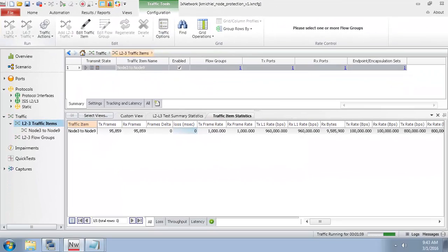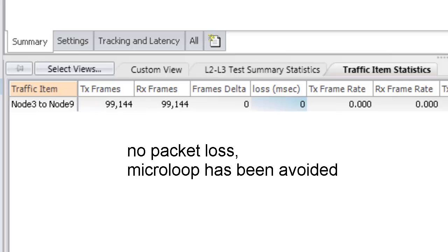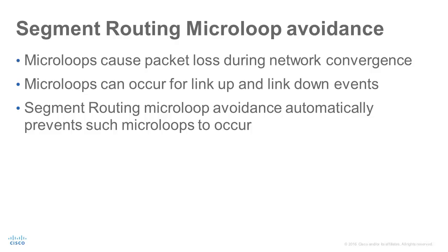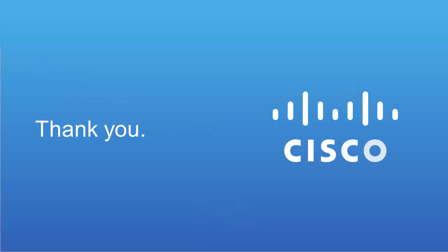Going back to the traffic generator to stop the traffic stream. No packets are lost, which means that the microloop has successfully been avoided. Microloops cause packet loss during network convergence and can occur for both link up and link down events. We have seen in this demo how Segment Routing can automatically prevent these microloops by temporarily steering traffic on a loop-free path while the network converges. Visit us for more Segment Routing information at cisco.com and segment-routing.net. Thank you for watching this video.